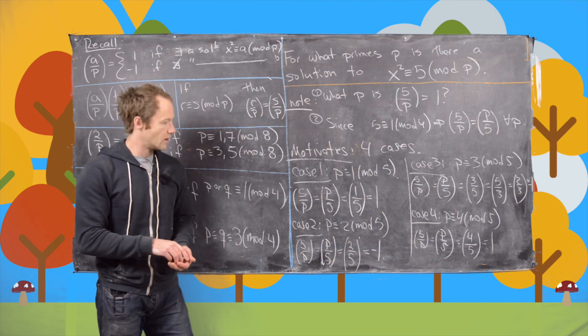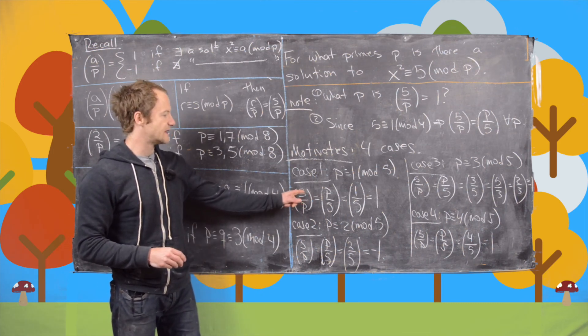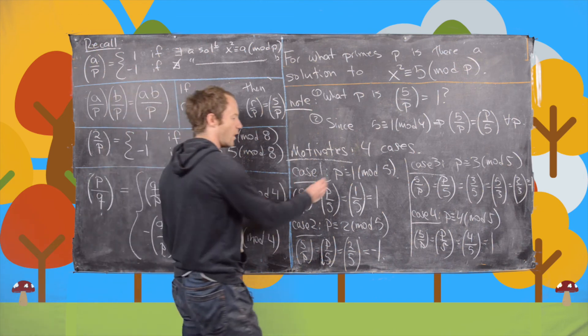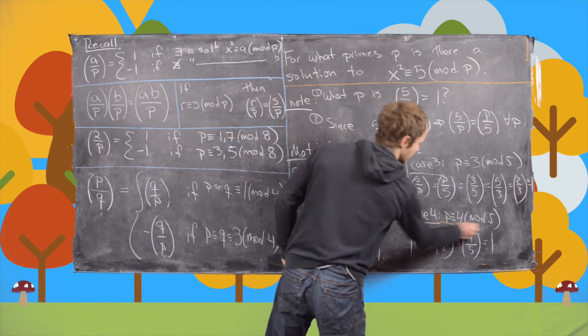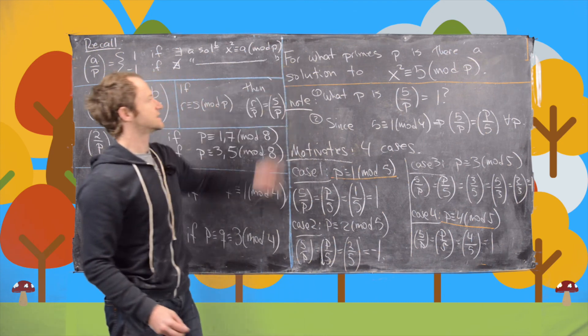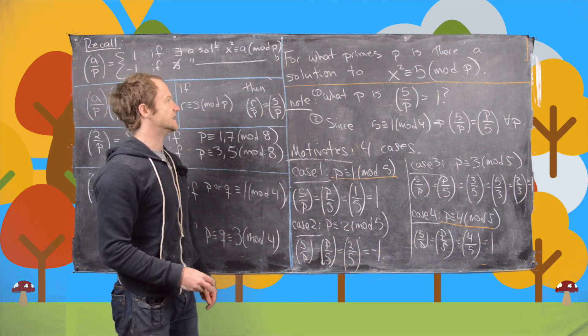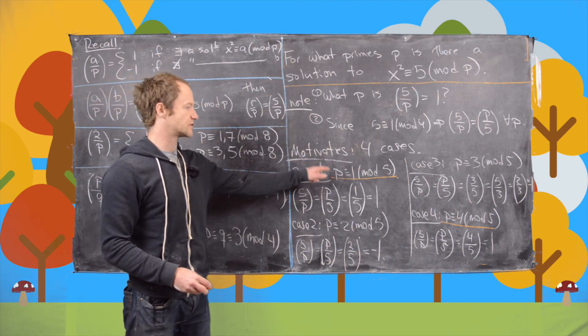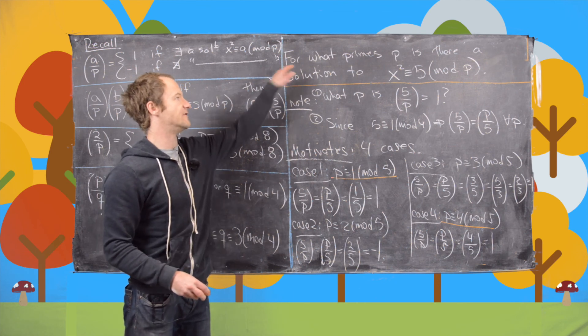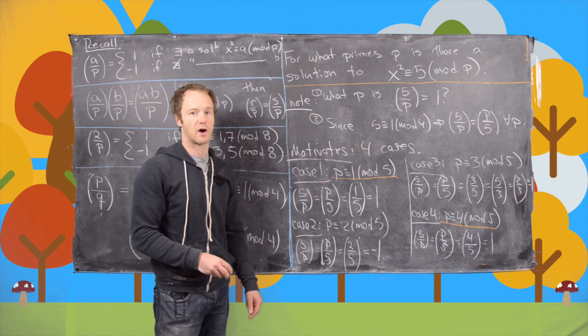And so we get the answer that 5 by p is equal to 1 in case number 1 and case number 4. In other words, the answer for this is if p is congruent to 1 or 4 mod 5, there is a solution to this quadratic congruence.